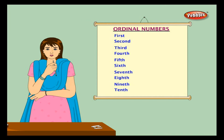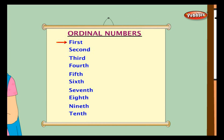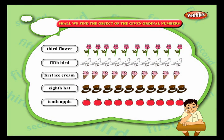First, second, third, fourth, fifth, sixth, seventh, eighth, ninth, tenth, and so on are called ordinal numbers. Let us learn these numbers through some examples.